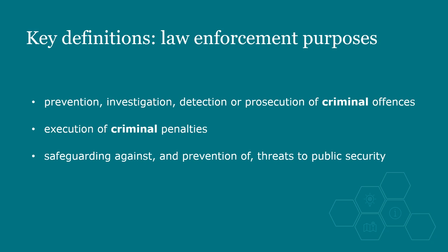Part 3 applies to information which is processed for law enforcement purposes by a competent authority. Section 31 of the DPA lists these purposes. This does not cover civil enforcement processing, which falls under the UK GDPR. An organisation may process data under the UK GDPR and then pass it to the police who will process it under Part 3 of the DPA. For example, the processing of data by banks for the purposes of detecting crime such as fraud initially falls under the UK GDPR. If they pass fraud data to the police or National Crime Agency, these competent authorities will process it under Part 3.